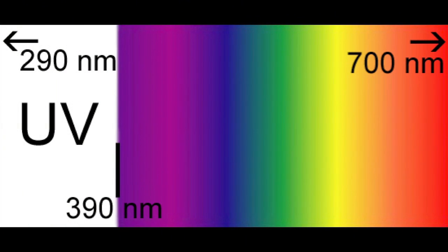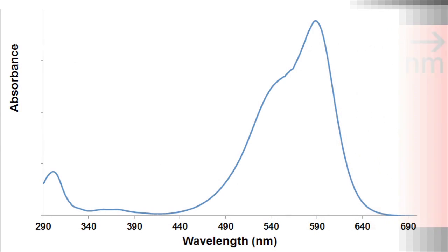For this experiment, I have set the wavelength range from 290 nanometers to 700 nanometers. And now we can see the data that the spectrophotometer produced. It appears that our solution absorbs light over a range of colors, and the peak absorption is at 590 nanometers.